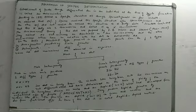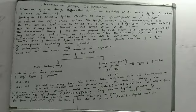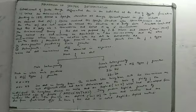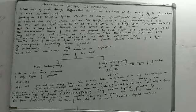It seems to be a very complicated definition but it is not. Look for the keywords. The two keywords here are: first, differential development, and second, zygote formation. Just remember these two. Differential development is taking place at the time of zygote formation — that is sex determination.